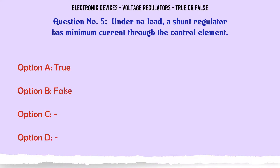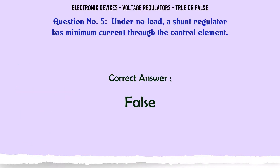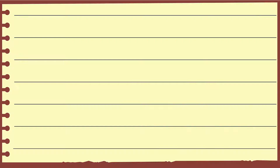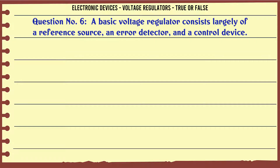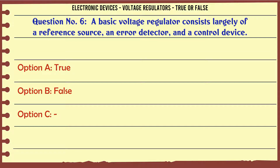Under no load, a shunt regulator has minimum current through the control element. A. True. B. False. The correct answer is: False.